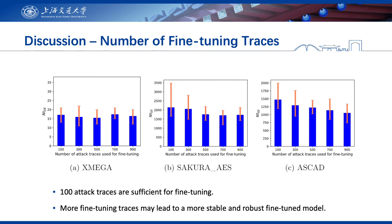Although fine-tuning with MMD loss helps obtain a robust model, we need a set of attack traces to estimate the MMD. Despite the fact that acquiring unlabeled traces from the target device is not a strong assumption, it is still meaningful to figure out how many traces are appropriate in practice. Therefore, we conduct experiments with the number of traces varying from 100 to 900. We observe that 100 traces are sufficient for the fine-tuning phase, as they provide sufficient information distinguishable from the source domain. Using more traces leads to a more stable and robust fine-tuned model, since more traces help obtain a more precise estimate of MMD.